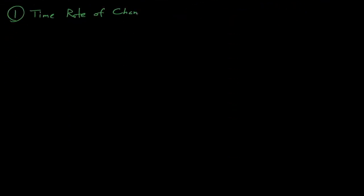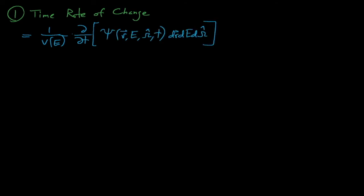We've already discussed the neutron rate of change term, which equals 1 divided by the velocity times the time rate of change of the angular flux. The next term, the leakage term, is perhaps the strangest and most unintuitive of these six terms.